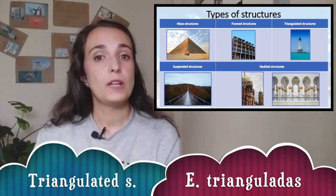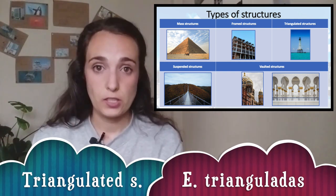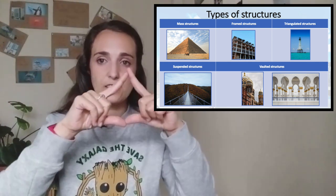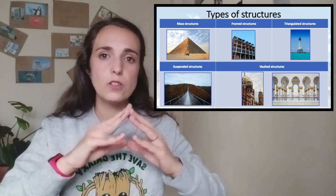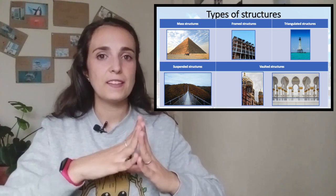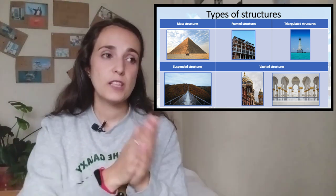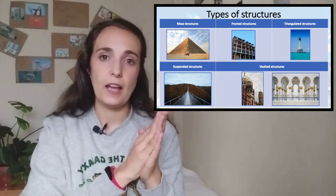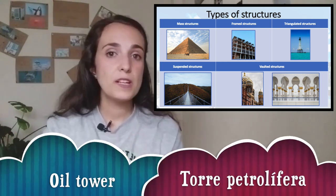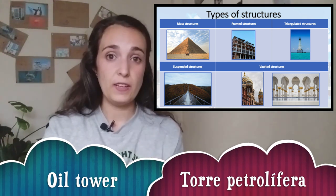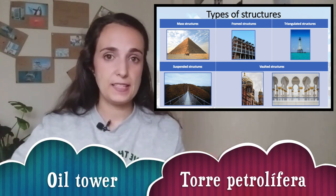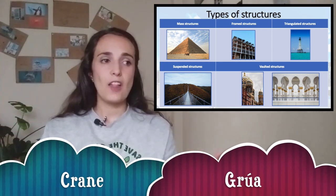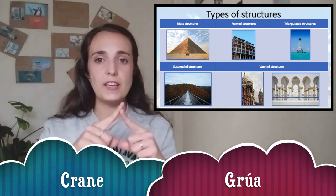Then we have triangulated structures. Their section is not square — it's a triangle. They can support a lot of weight and are really strong. Famous examples include the Eiffel Tower, towers in fields on land or at sea, and cranes. All of these structures are made with triangles.